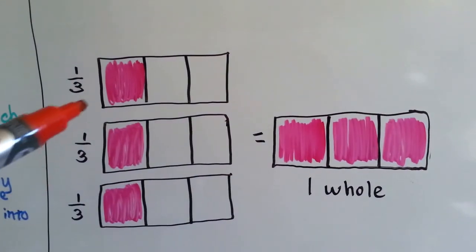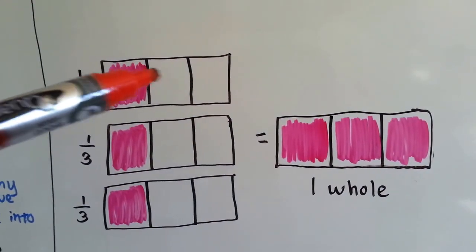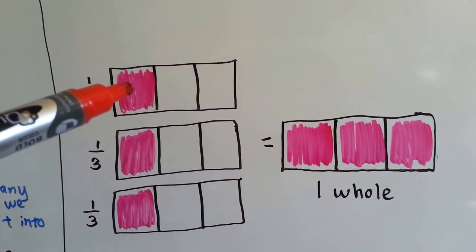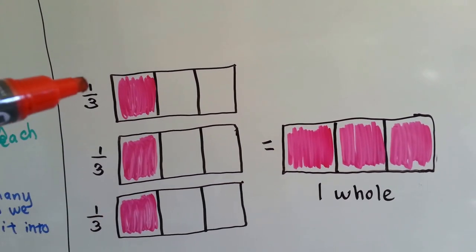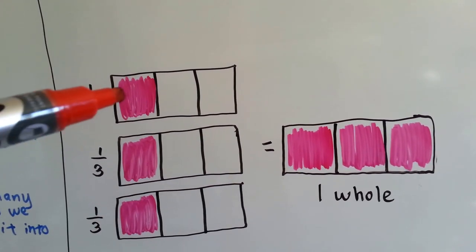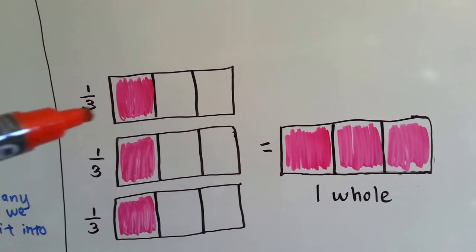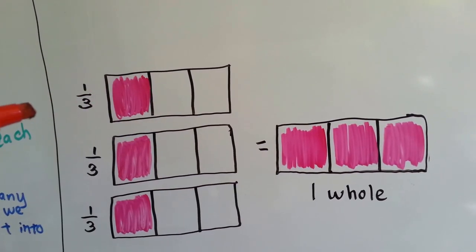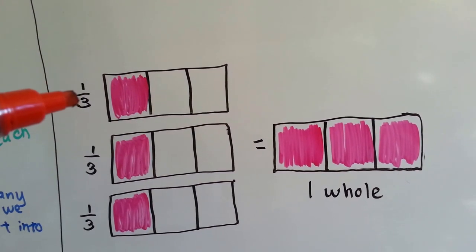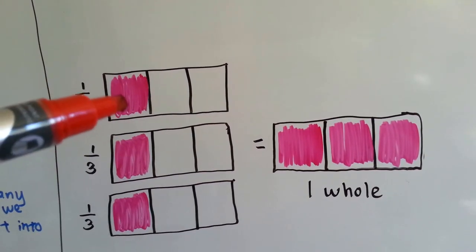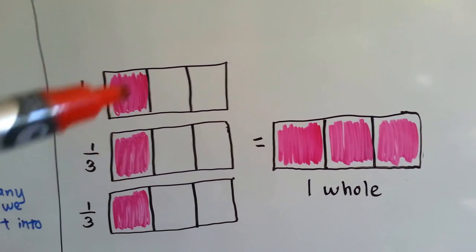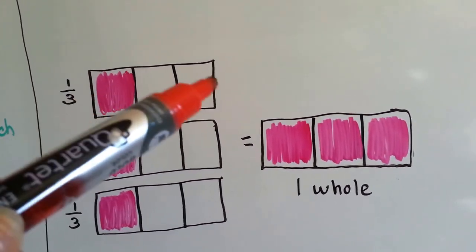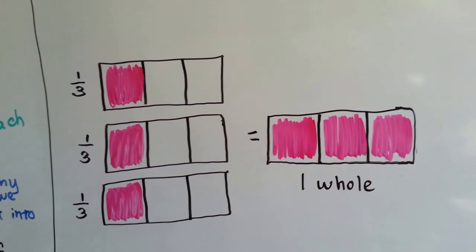Now look at this. We cut this rectangle into three parts and we colored one part pink. We did the same for this one and this one. So, this is one of three. The three is how many parts it was split into and the one is how many parts got colored in. One third. If we had one third three times, it would be the same thing as filling in all three of these boxes — we'd have one whole.